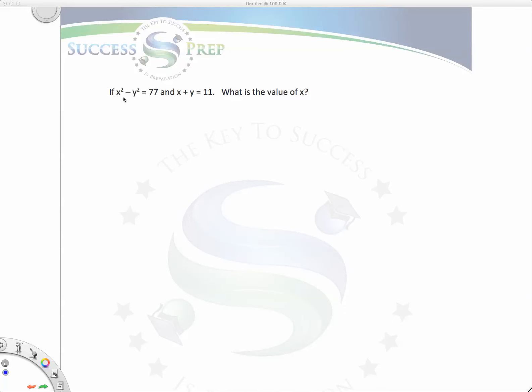The first thing you got to understand with this particular type of question is this is what you call the polynomial type of question. The first thing they expect you to understand is that when you see the value x squared minus y squared, it's really equal to the difference of two squares, which is the multiplication of x minus y times x plus y. That's the first thing you got to see about this type of question.